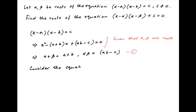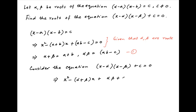Now we need to find the roots of the equation (x − alpha)(x − beta) + c = 0. This can be written as x² − (alpha + beta)x + alpha·beta + c = 0. From Result 1, we know that alpha + beta = a + b and alpha·beta = ab − c.